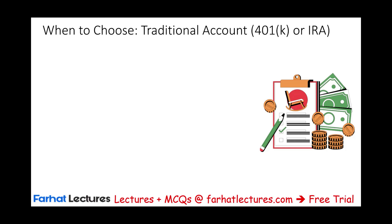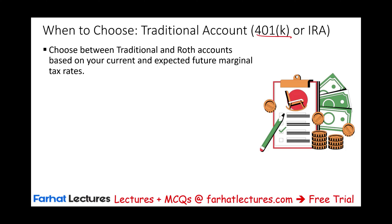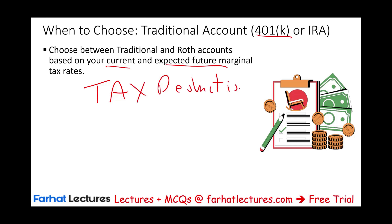When choosing between a traditional 401k or a traditional IRA, if there's employer matching on the 401k, you want to contribute up to the match at least. Choosing between a traditional and Roth IRA depends on your current and expected future marginal tax rate. Both the traditional 401k and traditional IRA give you a tax deduction now — the money you put away is shielded from taxation.